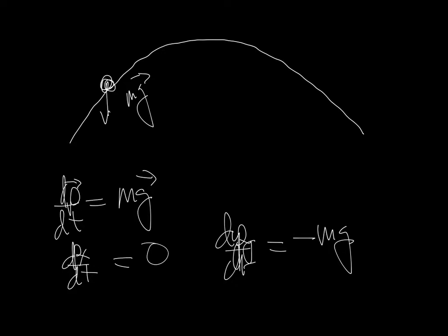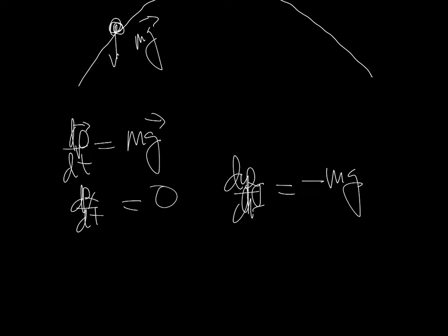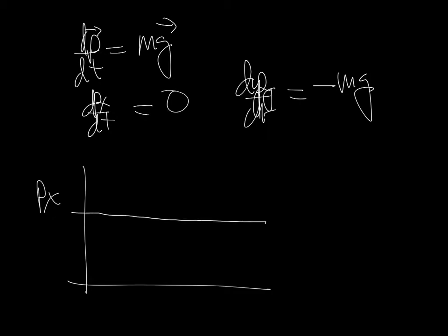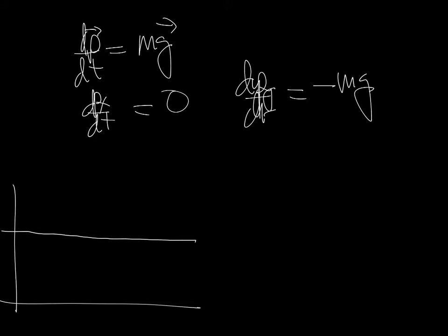Now, if I go ahead and graph that — p_x as a function of time — dp_x/dt is zero, that means the slope is zero. So whatever p_x is, it's going to be a constant in time. And dp_y/dt is negative — negative mg — so dp_y/dt is the slope of p_y versus t. Let's go ahead and graph the y component of momentum versus time.